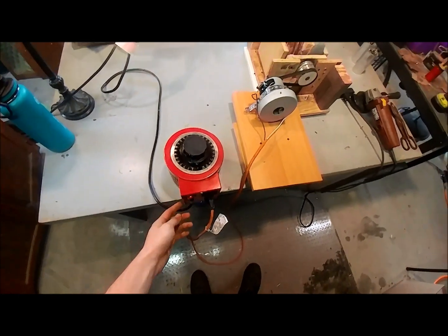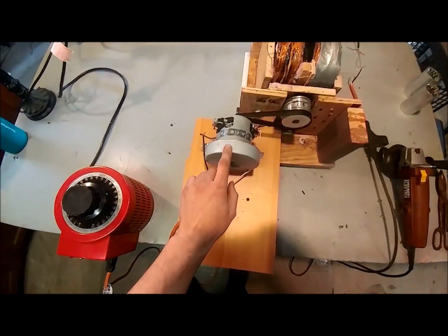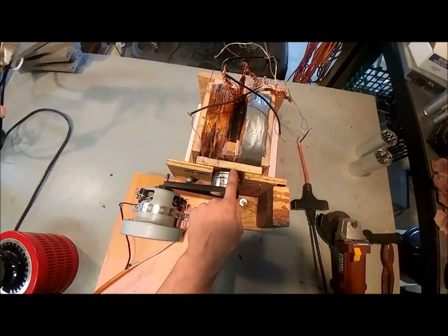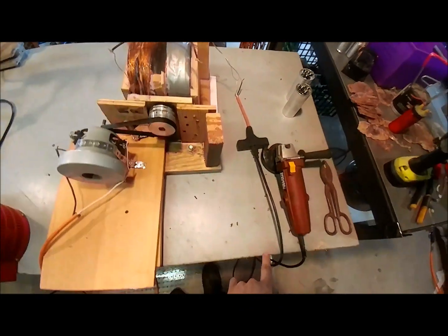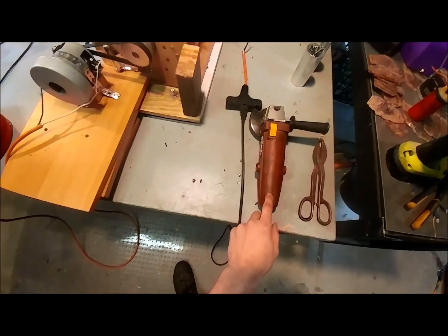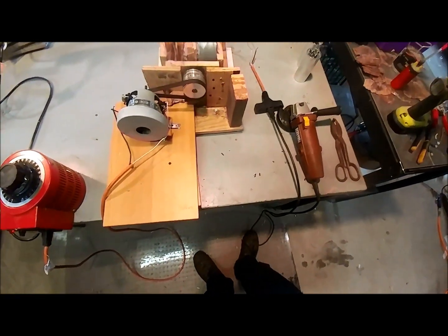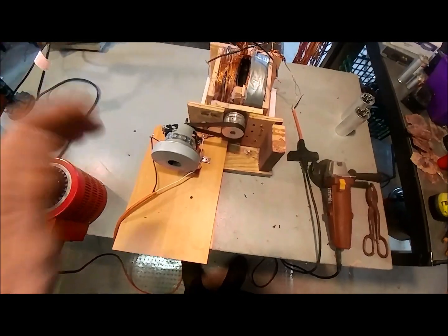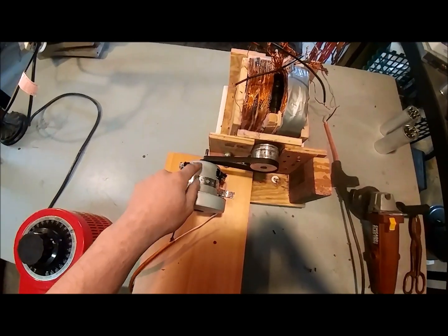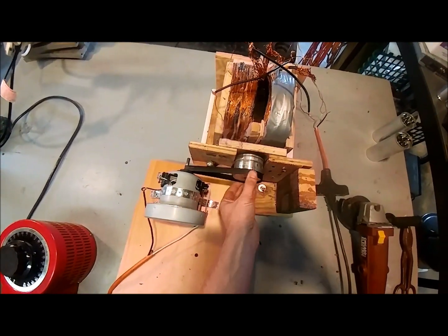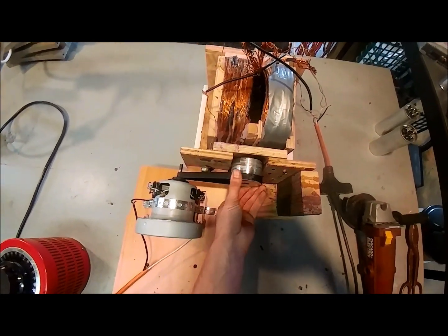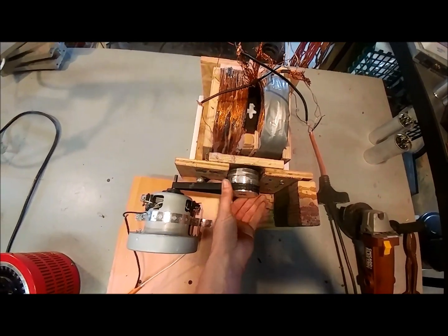All right, so we've got a Variac that powers our motor, and our motor is going to power our generator. Our generator is going to produce AC power to power the grinder. It's a 120 volt AC motor, but in the future, this will be replaced by our turbine. And our turbine will actually rotate the motor, or the generator, to produce electricity.